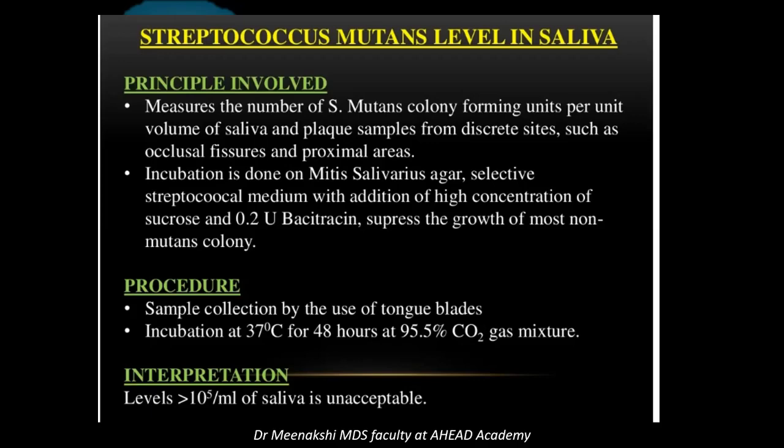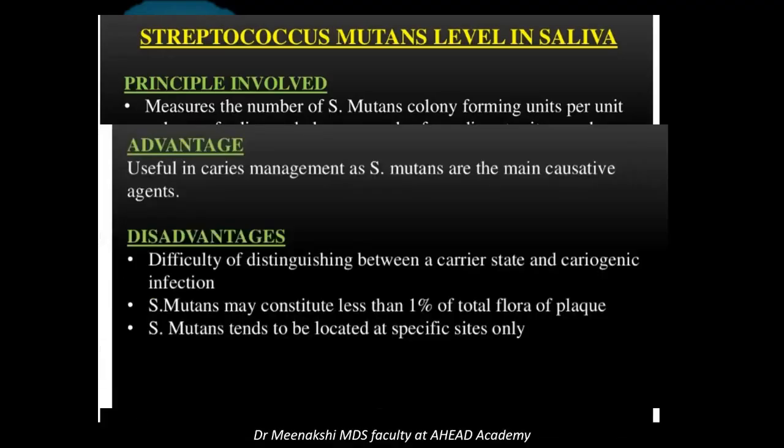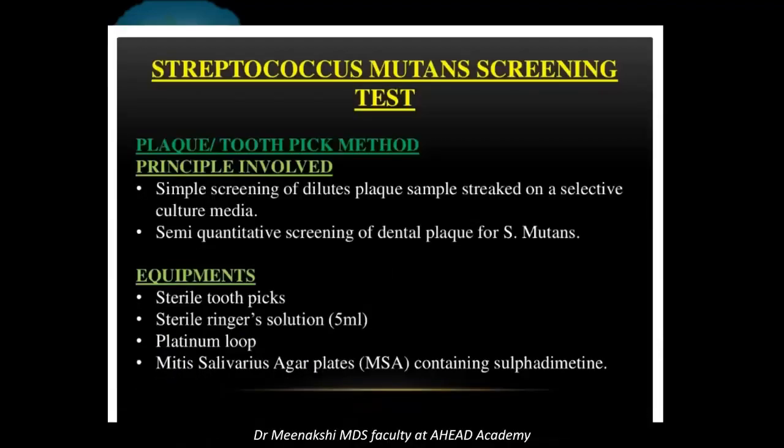The interpretation: a level of 10 to the power of 5 per ml of saliva is acceptable. It is a simple screening method in which dilution of the plaque sample on a selective culture media is done.